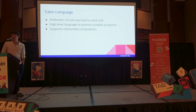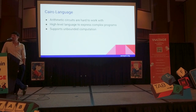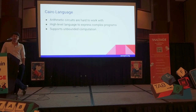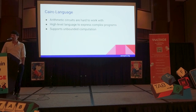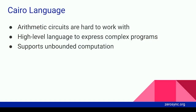StarkWare, the company who built STARKs, developed the Cairo language. They did that because usually you have to implement proofs in arithmetic circuits, essentially expressing everything you do in math, which is way more complicated than usual programming. That's why they invented this higher-level programming language that allows you to express complex programs more or less as you're used to from other programming languages. There's also support for unbounded computation, which is very important for Bitcoin, because a Bitcoin transaction is very unbounded — you don't know upfront how many inputs or outputs it will have. Cairo supports this through a virtual machine.